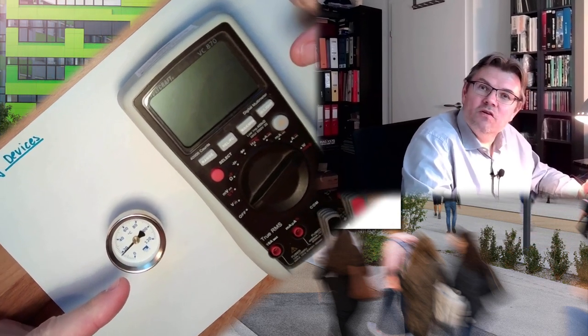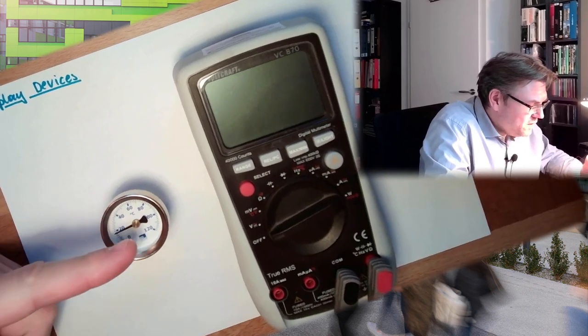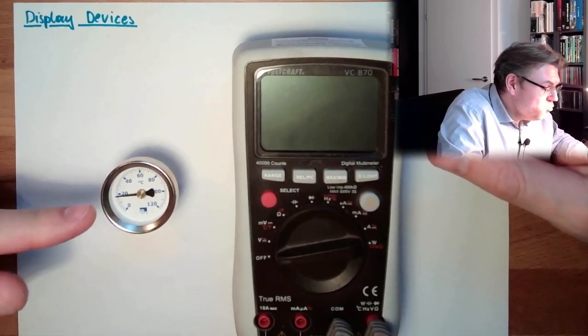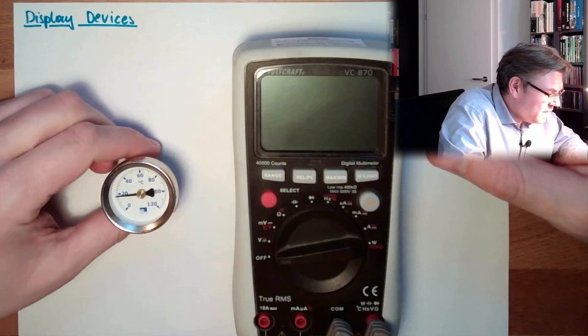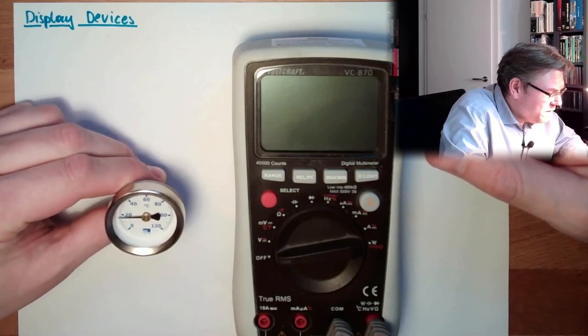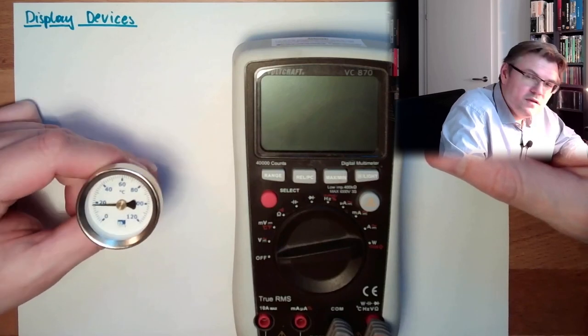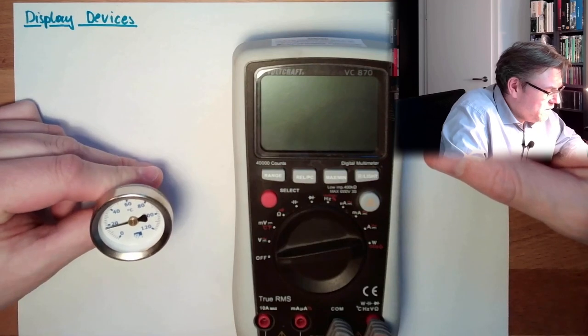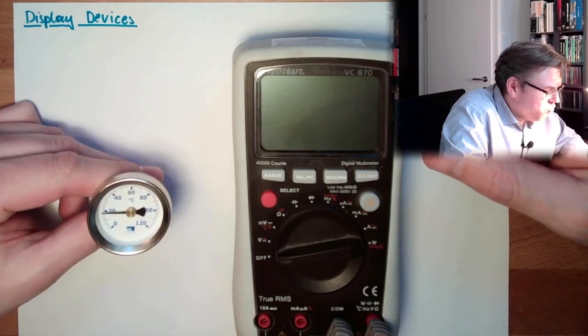One example is an analog display. There is a scale, there is a pointer. The pointer is pointing to the measured value. In this case, it's a temperature measurement and it's a little bit below 20 degrees. I don't believe this is accurate, but alright.